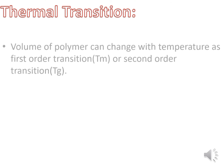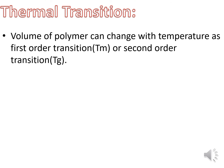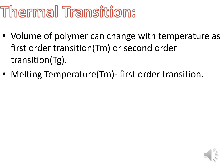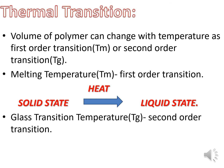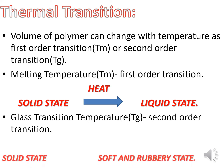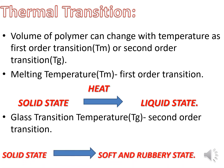Thermal transition: The volume of a polymer can change with temperature as a first-order or second-order transition. First, melting temperature is a first-order transition — when heat is applied, the solid-state polymer is converted to a liquid state. Second, glass transition temperature (Tg) is a second-order transition — when heat is applied, the solid-state polymer is converted to a soft and rubbery state.